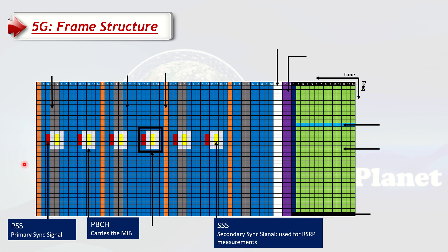As a whole, PSS, SSS, and PBCH together are called the SSB — Synchronization Signal Block. This is very important in 5G. The coverage of SSB can tell you what your 5G access coverage is — if you do not have good SSB coverage you will not have good 5G coverage, and if a user cannot decode this, they cannot access the 5G cell. That is why vendors often use this in a beam sweeping way, which we will explain in later videos.